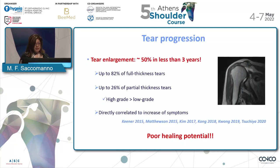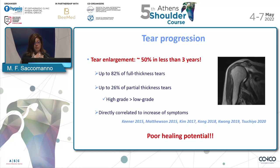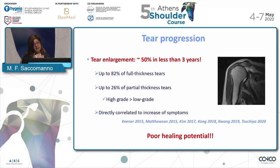When we think about whether and how we should treat this lesion, one key question is: is there tear progression? Full thickness tears certainly enlarge more frequently, but partial thickness tears can also enlarge and can become full thickness. This happens in up to 26% of cases, especially for high-grade tears. They enlarge very slowly — it takes years — and usually there is a direct correlation between increase in symptoms and enlargement of the tear. We also need to keep in mind that they have a very poor healing potential, but they can stay there indefinitely.